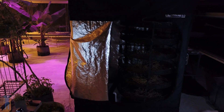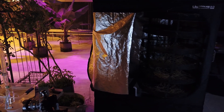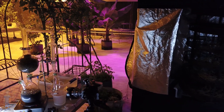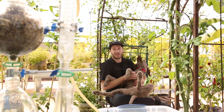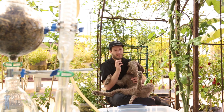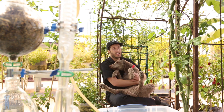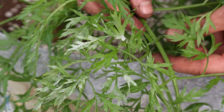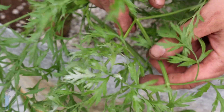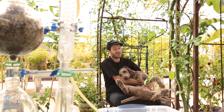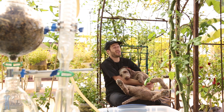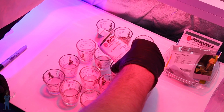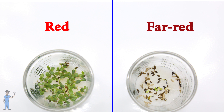Less compact plants are nice because you can get good airflow through your crops. When you have bad airflow, you can have issues with powdery mildew, so having a less compact plant can help prevent that. Far-red light can also have an inhibitory effect on the germination of some seeds, as shown in the previous episode.